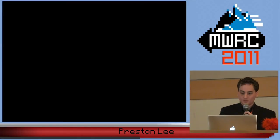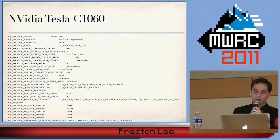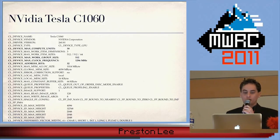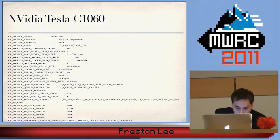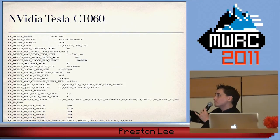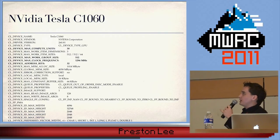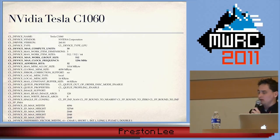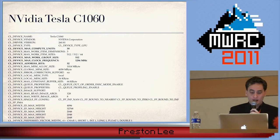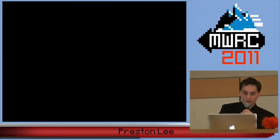I didn't want to lug a giant desktop machine on an airplane, so I didn't bring a Tesla C1060 with me, but here is the output captured from that. The maximum compute units is 30. The number of threads per group size is 512 — that's thousands of concurrent threads. The clock rate is approximately 1.3 GHz, still a 32-bit architecture, and the alloc size is around 1 gigabyte at a time. The difference in throughput between what you have in your laptop and what you can get in these commercial cards for around $500 is huge.